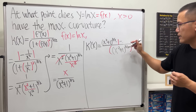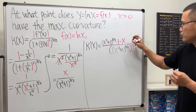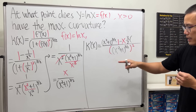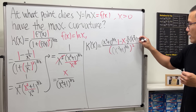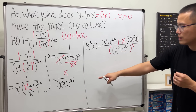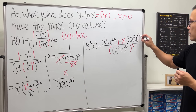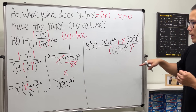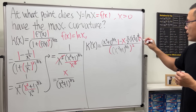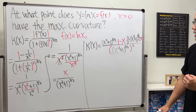So the top half: the derivative of the bottom is 3/2 times (x² + 1) raised to the 1/2 power — after subtracting 1 from the exponent — and then multiplied by 2x, which is the derivative of the inside.